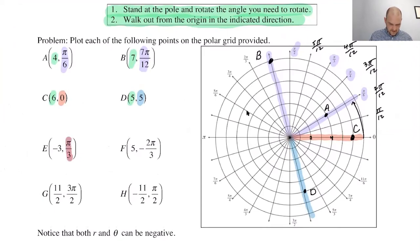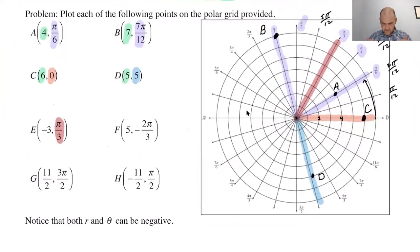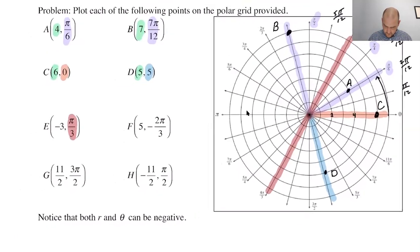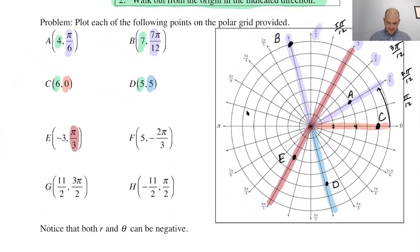The next point has theta equal to pi over 3 and R equals negative 3. You rotate to pi over 3, facing into the first quadrant, but R is negative so you walk backwards. Walking backwards while facing into the first quadrant means you walk into the third quadrant. I extend the line through the origin so I can see it, then go negative three: one, two, three — that's point E.